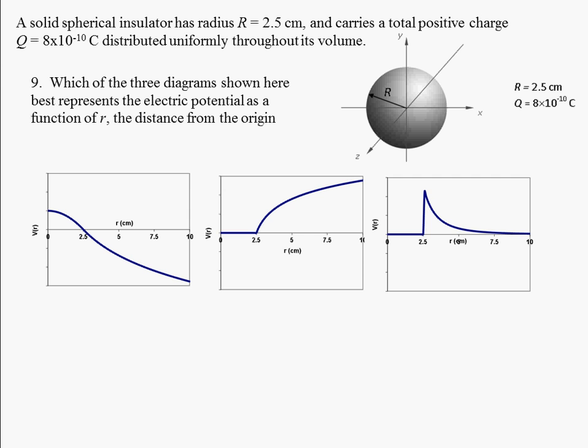Notice on all three graphs, they go through zero right at 2.5, which is at the edge. We've already discussed that the electric field points radially away because this is a positively charged sphere.